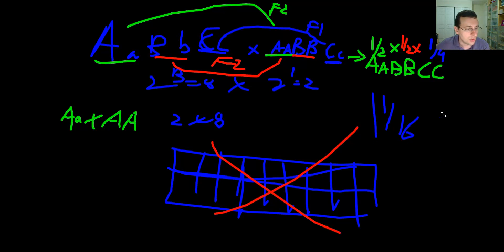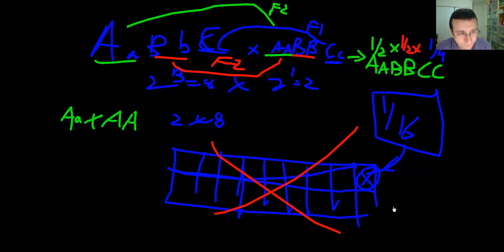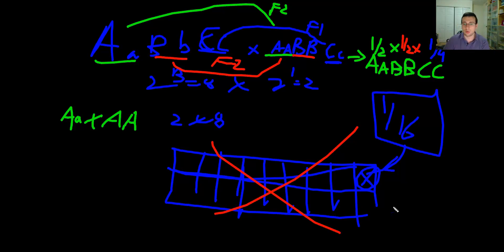That means if you were to do the entire Punnett square with two rows and eight columns, only one of those boxes would be what you wanted. You would have wasted all your time to find just one box. So for dihybrid and trihybrid crosses, always use probability — it's much faster.